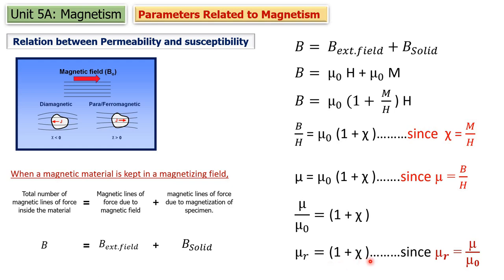So this is all about the various terms related to magnetism. In the next video lecture we will see the classification of magnetic materials, the behavior of materials in a magnetic field, and how we can classify those materials based on that behavior. We will see you in the next video lecture.